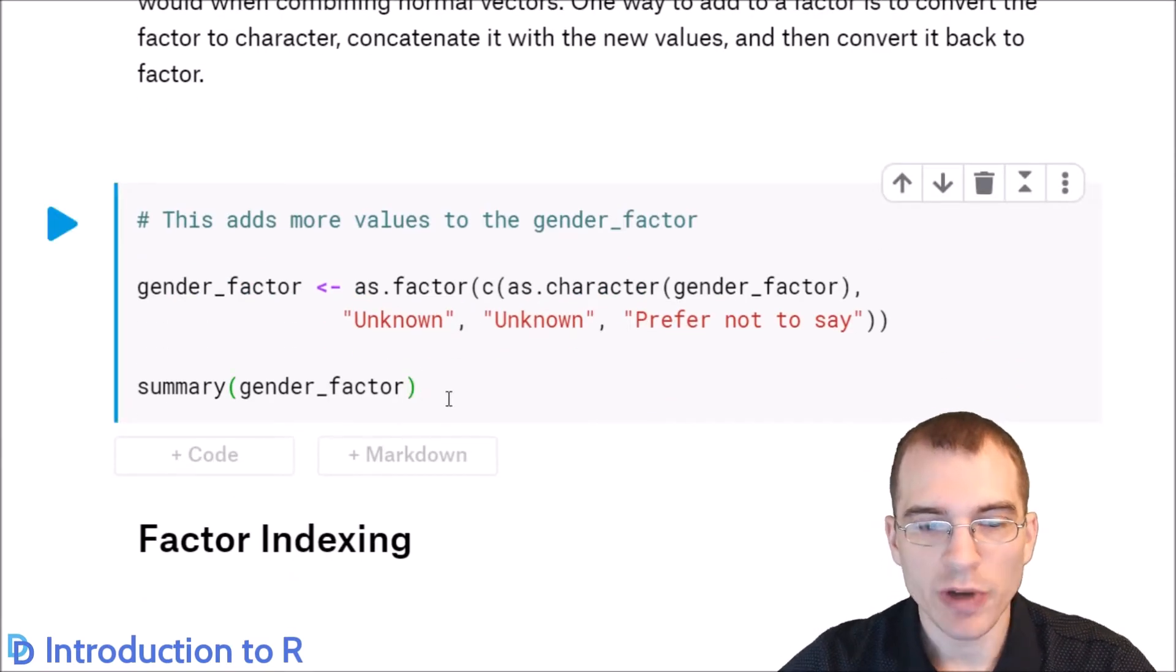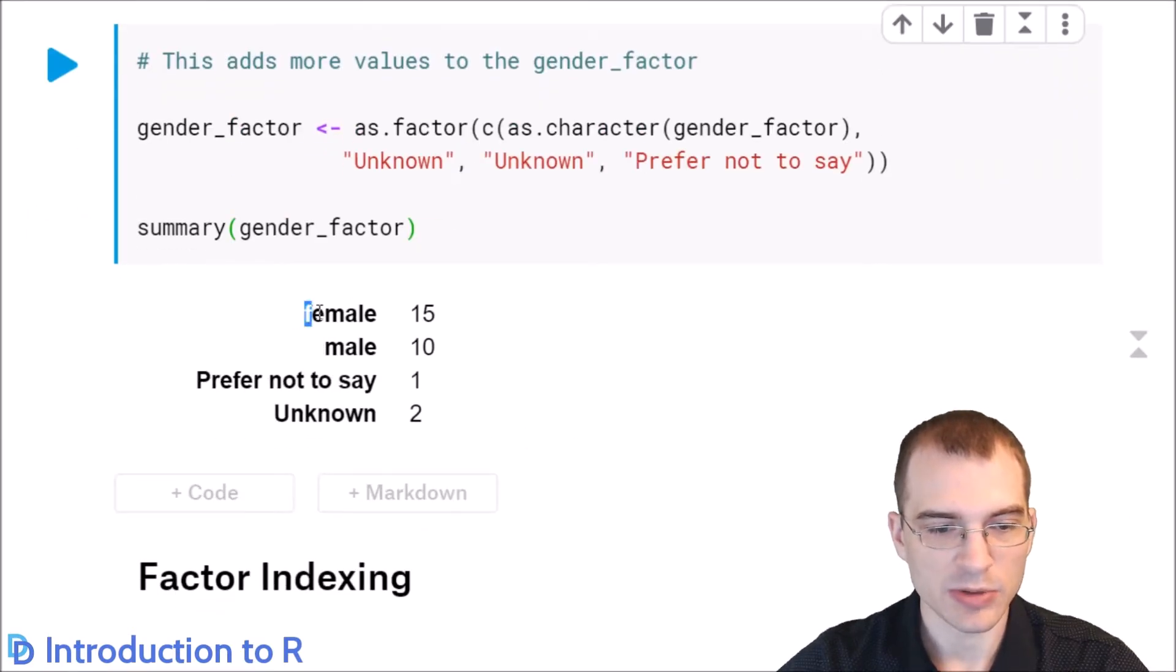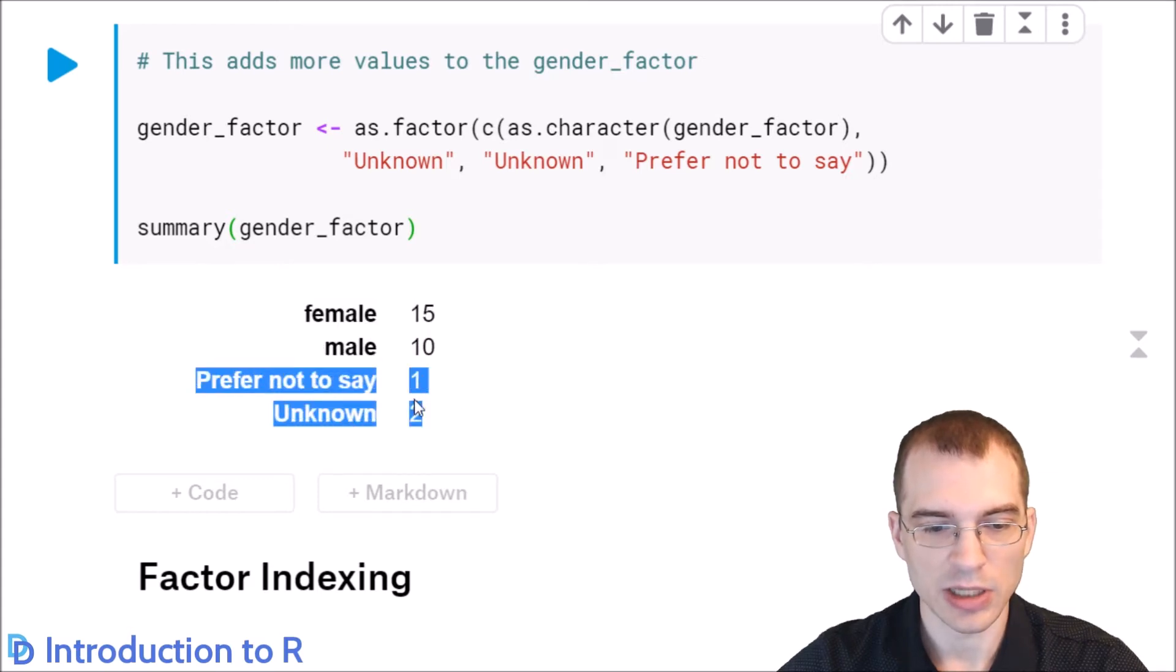So if you want to add new values to an existing factor, you can't just use the C function like you would with a normal vector. So one way that you can add new values to a factor is just convert it back to whatever the base data type was, concatenate on whatever the new values are, and then turn it back into a factor. So that's what we're doing in this construction here. We're saying as.character on our factor. So that turns it into a character. We're using C to add on or combine on some new values, unknown, unknown, prefer not to say. And then that's all wrapped in this as.factor call. Or we could have just used factor too. But that will turn this whole thing back into a factor with these new categories added. Let's run that. Show a summary. So you can see we have our original values here, but we also have these extra categories that have a couple entries for them.